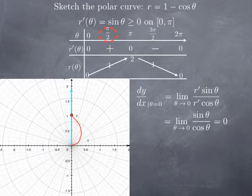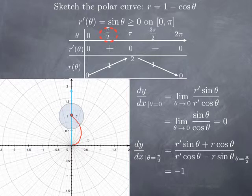We can calculate dy over dx with the formula r prime sine theta plus r cosine theta divided by r prime cosine theta minus r sine theta, evaluated at theta equal pi over 2. When theta equals pi over 2, cosine is zero, so several terms vanish. We end up with r prime sine divided by negative r sine; the sine cancels, leaving r prime divided by negative r at pi over 2. Since r prime equals sine theta, at pi over 2 it's 1. And r equals 1 minus cosine theta, so at pi over 2 it's also 1. Therefore we get 1 over negative 1, so the slope of the tangent line at that point is negative 1.